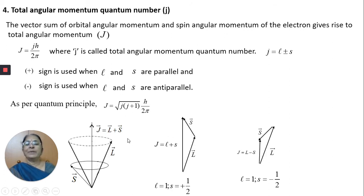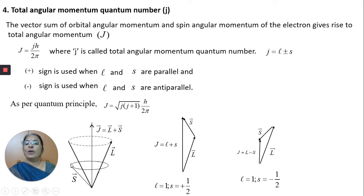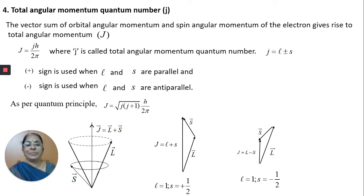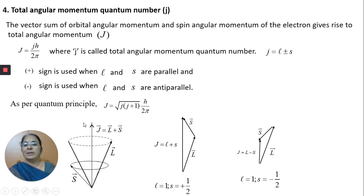From the diagram, the orbital angular momentum is pointed in one direction and the spin angular momentum in another direction. The vector sum of L and S gives the J value equal to L+S. If the spin is in the other direction, J becomes L−S. The total angular momentum is simply the vector sum of L and S, beautifully expressed by this diagram.